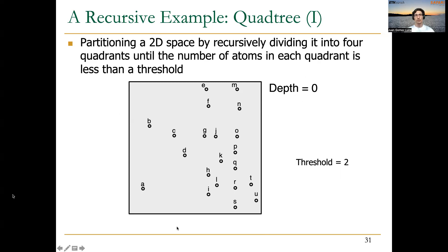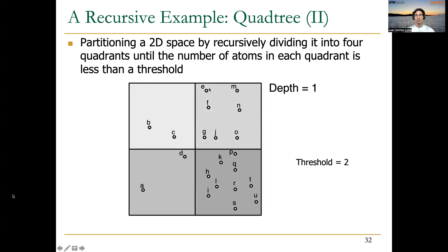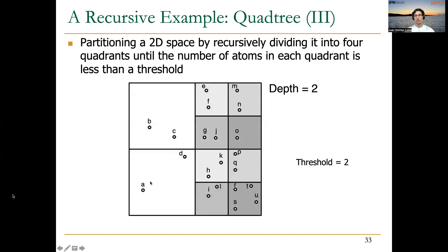At depth zero of the tree, we have the entire 2D space with all the points. At the next level, we have already partitioned the 2D space into four quadrants and clustered some of the points. Some quadrants will not proceed further in the partitioning because their number of atoms equals the threshold of two. At depth 2, we continue partitioning those quadrants that still have more than two atoms. Finally, at depth 3, only one small region is still being processed because it originally contained more than two atoms.